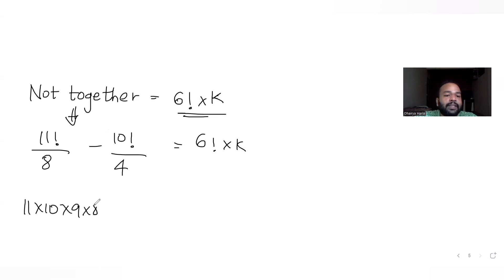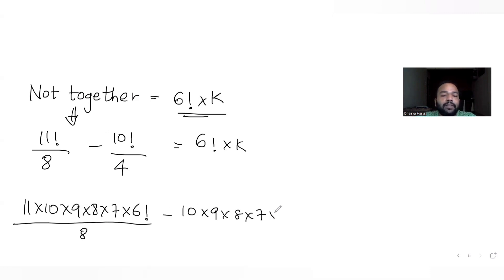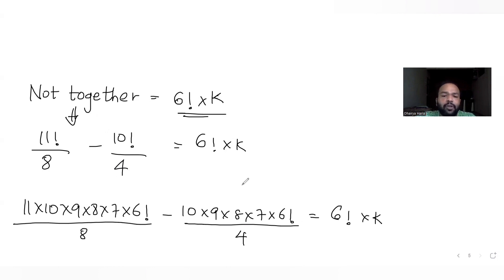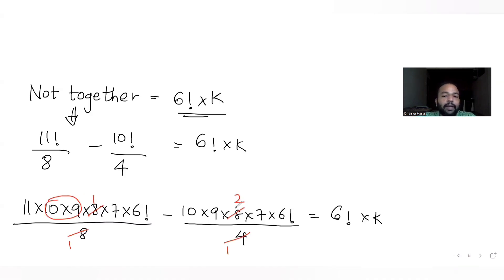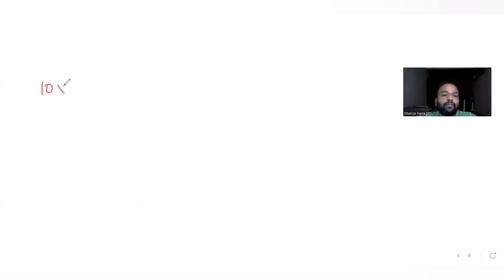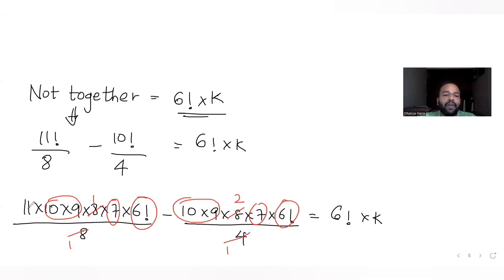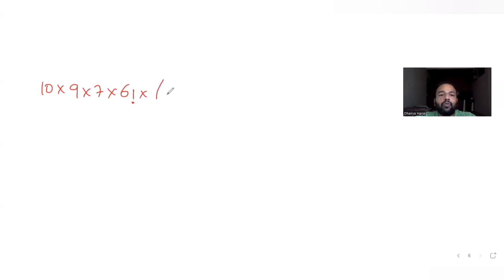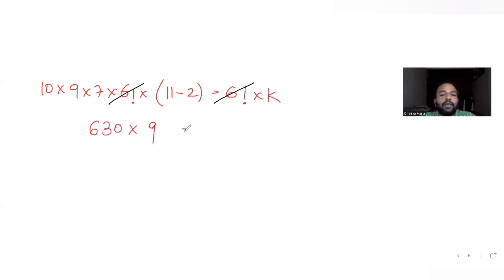I can write 11 factorial as 11 × 10 × 9 × 8 × 7 × 6 factorial, divided by 8. And 10 factorial I write out similarly. Taking 6 factorial common, after simplification I am left with terms involving 10, 9, 7 and 6 factorial, minus the corresponding 10 factorial upon 4 terms, equated with 6 factorial into K.